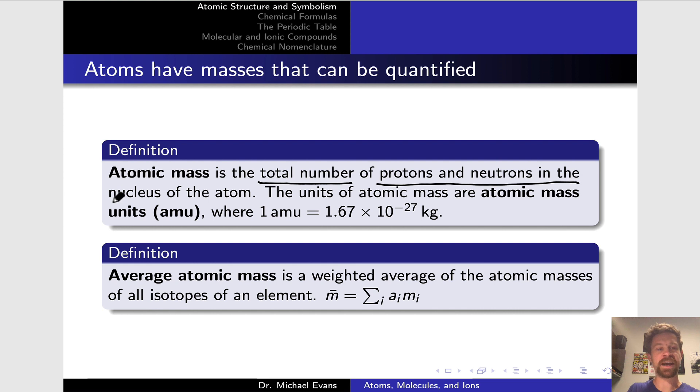We previously called that the mass number. If we ignore the mass of electrons in the atom, which is extremely tiny relative to the mass of protons and neutrons, then we can basically say that the mass number is equal to the atomic mass in atomic mass units. And here we're defining that atomic mass unit as 1 AMU equals 1.67 times 10 to the negative 27 kilograms. The number is not important. The thing is we're defining this with reference to the mass of a proton or neutron.